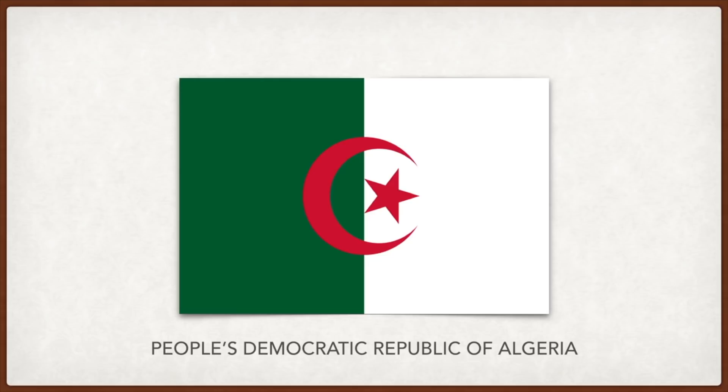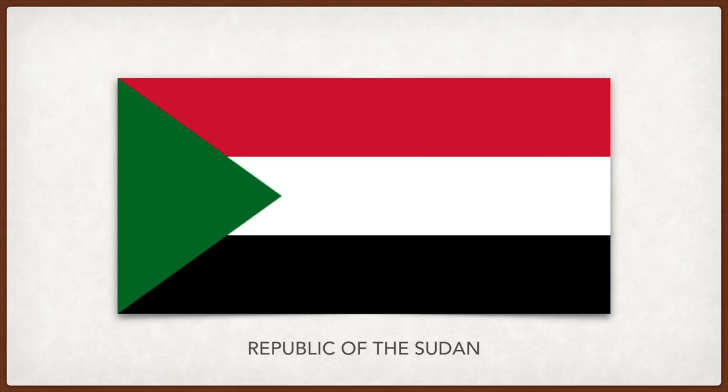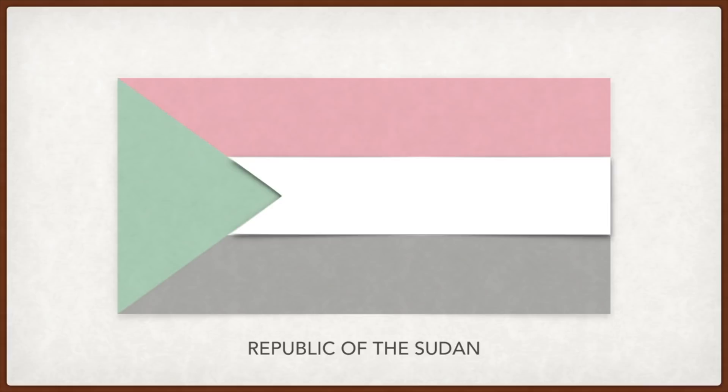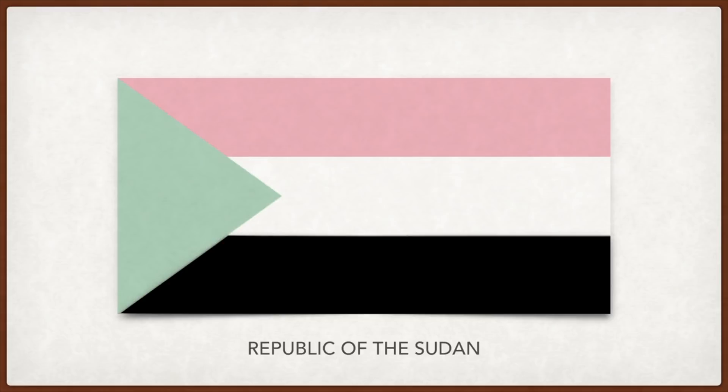Sudan: the red, white, black, and green together represent Arab unity, while red specifically for Sudan represents blood spilt for independence, white represents peace, green represents Islam, and black represents Sudan — 'Sudan' meaning black in Arabic. Poland: the colors come from the coat of arms of the Polish-Lithuanian Commonwealth — white from the white eagle of Poland and the white knight of Lithuania, and red from the shields.